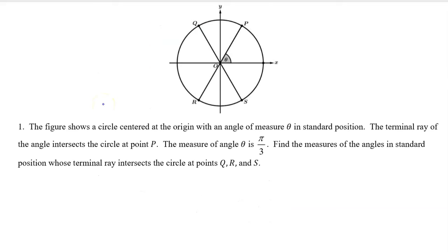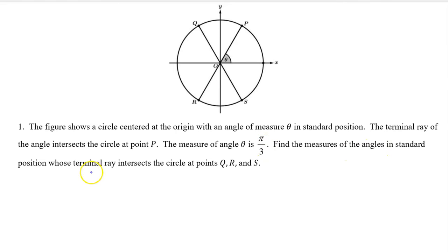Number 1. The figure shows a circle centered at the origin, with an angle of measure theta in standard position. The terminal ray of the angle intersects the circle at point P. The measure of angle theta is pi over 3. Find the measures of the angles in standard position whose terminal ray intersects the circle at points Q, R, and S.